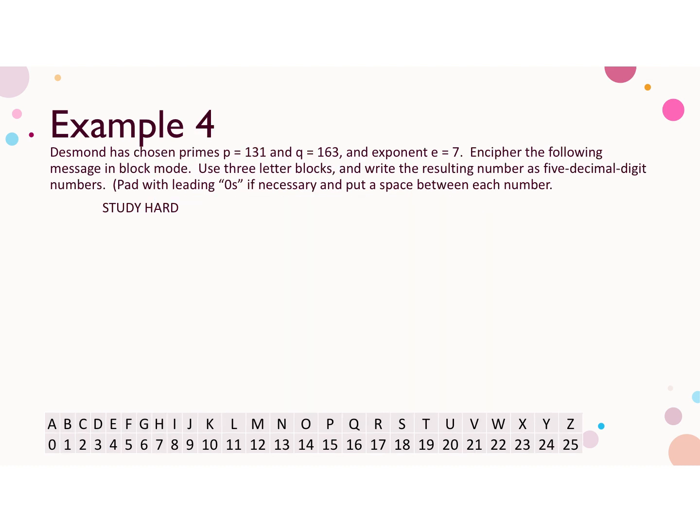Desmond has chosen primes p equals 131, and q equals 163, and exponent e equals 7. We want to encipher or encrypt the following message in block mode. We're using 3 letter blocks and writing the resulting number as 5 decimal digit numbers, padding with leading zeroes where necessary, and the message is study hard. I've broken up the message into blocks of 3.